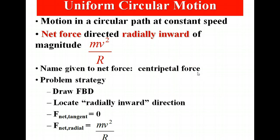When we solve problems involving uniform circular motion, our strategy is to draw the free body diagram of the object. Secondly, locate the radial inward direction. This is very important. Which direction is radial inward? In other words, from where the object is, where is the center of the circle? That's the radial inward direction.